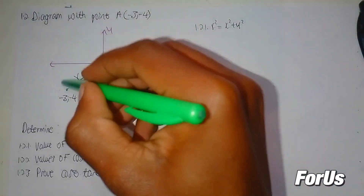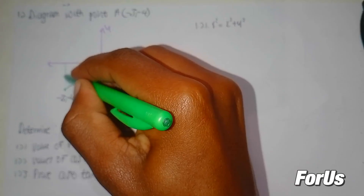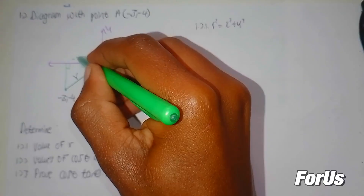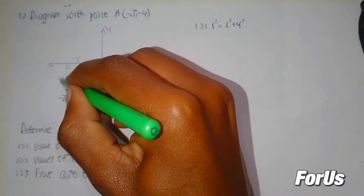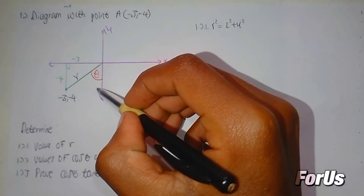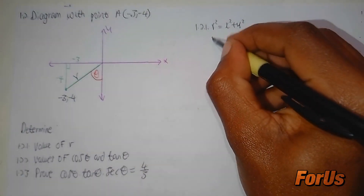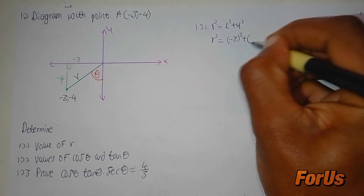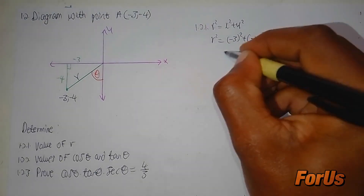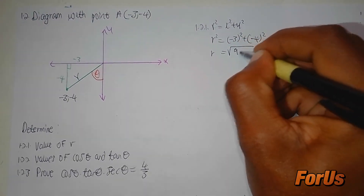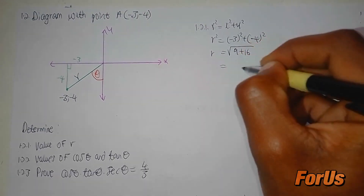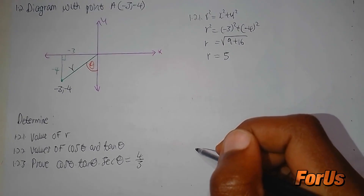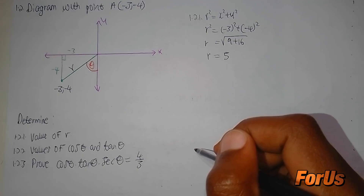We can complete a right triangle where the horizontal distance is negative 3 and the vertical distance is negative 4, and r is the hypotenuse. So r squared equals negative 3 squared plus negative 4 squared, which gives 9 plus 16. Therefore r equals 5.